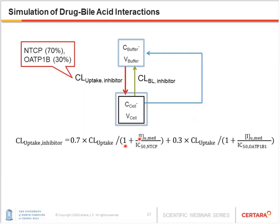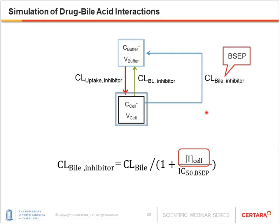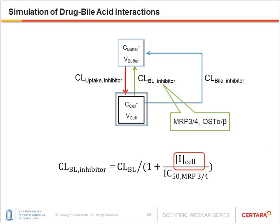To predict the effect of inhibitor on bile acid disposition, each clearance value was decreased as a function of inhibitor concentration and IC50. Uptake clearance of TCA is mediated by NTCP and OATP-1B1, so uptake clearance decreases as a function of medium inhibitor concentration and IC50 against NTCP and OATP-1B1. Biliary clearance of TCA is mediated by BSEP, so biliary clearance in the presence of inhibitor is a function of cellular inhibitor concentration and IC50 against BSEP. For basolateral efflux clearance, multiple transporters are involved including MRP-3, MRP-4, and OST-alpha-beta. We used IC50 against MRP-3 and MRP-4 since the IC50 values were close and prediction results were similar.